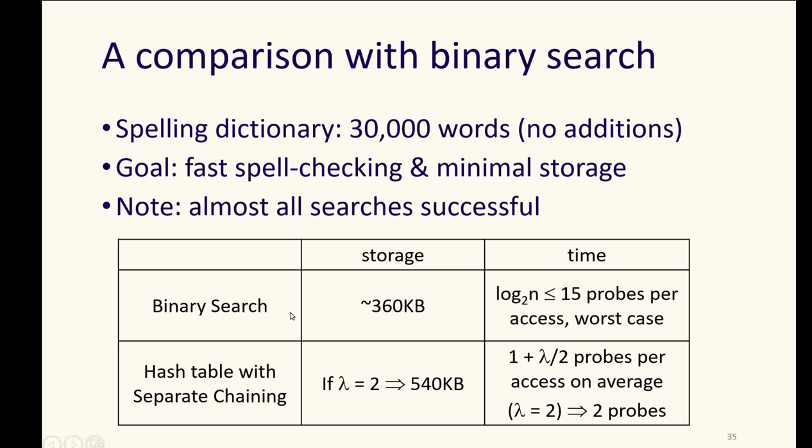Then, binary search takes about 360 kilobytes and its time is log n, which is less than 15 probes per access in the worst case. But, with a hash table with separate chaining in it, we can have a load of two, giving us 540 kilobytes. So, it takes a little more storage space. But, our probes that we have to do in those chainings, in that hash table there, are two probes on average.